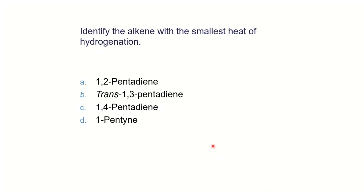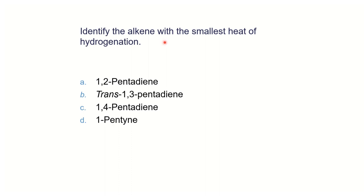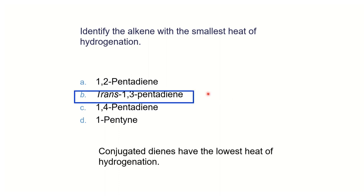A practice question asks you to identify which compound has the smallest heat of hydrogenation. You would draw each compound and analyze which is conjugated, isolated, a simple alkene, or a cumulative system. The conjugated system gives the smallest heat of hydrogenation. The order of stability is an interesting exam question — the conjugated system is most stable, followed by isolated, then cumulative.